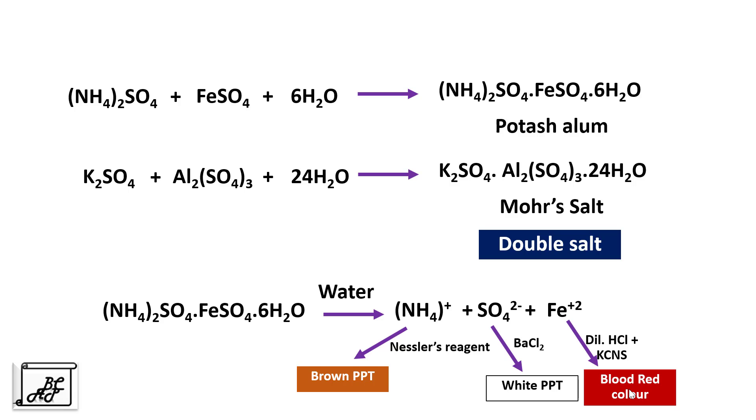That means if this double salt is added to water, like a simple salt when it is added to water, for example NaCl. If NaCl is added to water, it will give test for sodium ion as well as for chlorine. Because both the cation and anion get separated from each other. In the same way, double salts also get separated into its individual ion. Each of the ions will get detected in semi-micro qualitative analysis.